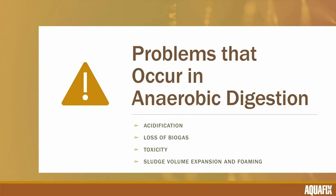Now let's talk about problems that occur in anaerobic digestion. The most common issue is acidification, where the pH starts to drop. Generally, if acidification is occurring and the pH starts to drop, you've already been too slow to address the problem. That's why we measure volatile acid to alkalinity ratio — so you can see acidification occurring before pH begins to drop and supplement alkalinity immediately to prevent any pH drop. Loss of biogas can also occur without any acidification component, sometimes related to poor degradability of feed sludge or poor hydrolysis.